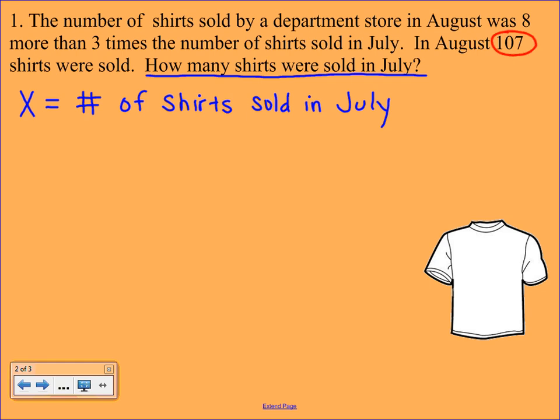Now it says in August we had 8 more than 3 times the number sold in July. Well, 8 more than - above the word more than you could put a plus sign, because in math more than means to add. 3 times - obviously times means we're going to multiply.